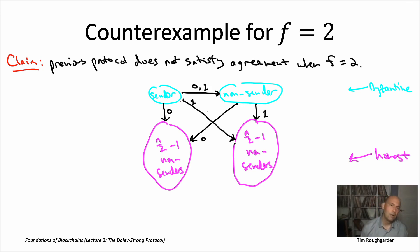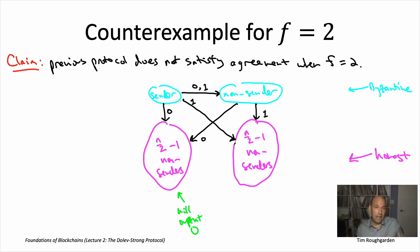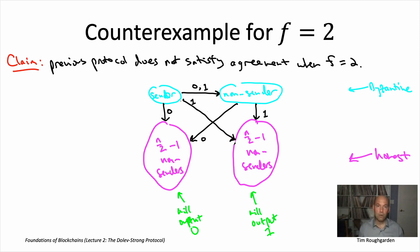This gives us a real violation of agreement. The honest non-senders in the left group get a total of n minus two votes equally split — n over two minus one votes for zero and n over two minus one for one — and the tie-breaking vote from the Byzantine non-sender is for zero, so their majority vote concludes with output zero. Meanwhile, the right group also gets an equal split of n over two minus one votes for both values, but the tie-breaking vote from the Byzantine non-sender is for one, tipping their majority vote to output one. Two sets of honest nodes output different things — a clear violation of agreement.